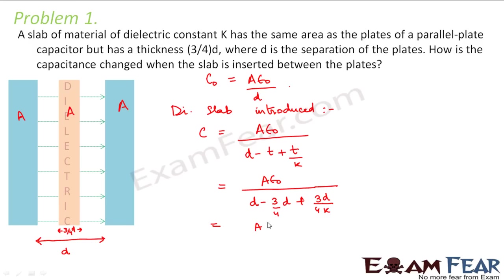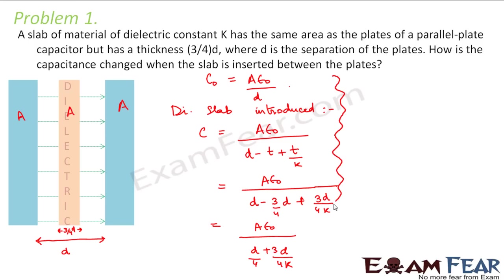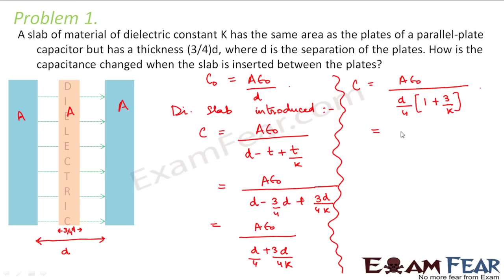So this becomes equal to A·ε₀ divided by D/4 plus 3D/(4K). Now this can be written as A·ε₀ divided by, taking D/4 common, so this is (1 + 3/K).